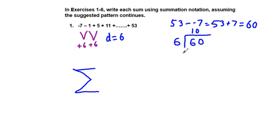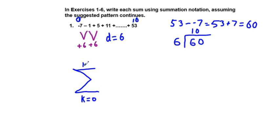6 goes into 60 ten times. As far as the number of terms, we're going to have 11. Starting at negative 7 as our first term, we add 6 every time, so 53 will be term number 11. We could go from negative 7 being term 0 all the way up to term number 10 — either way we have 11 terms. I like to start with k equals 0 and go all the way up to k equals 10, giving us 11 terms total.